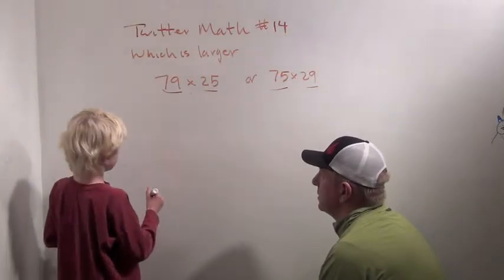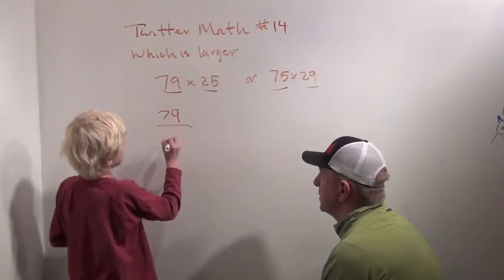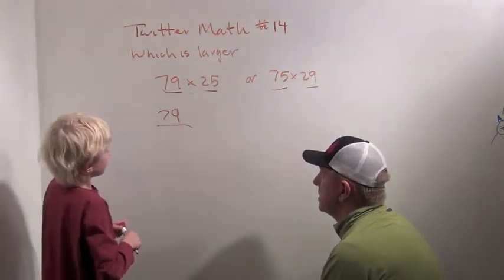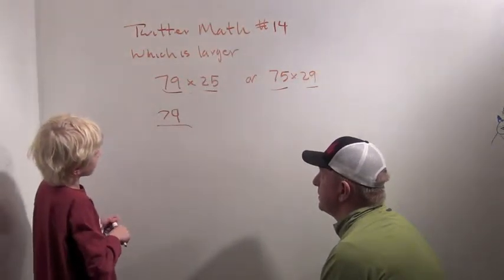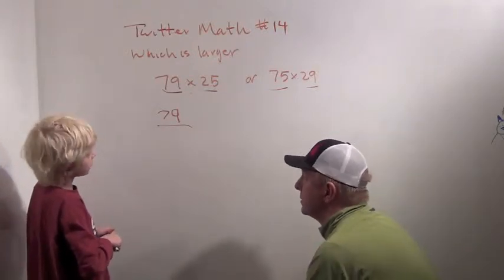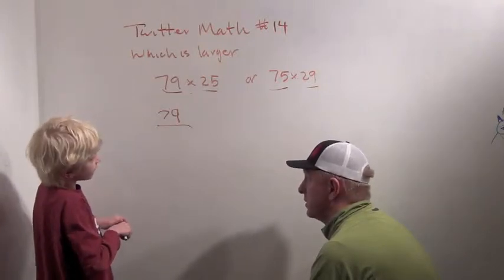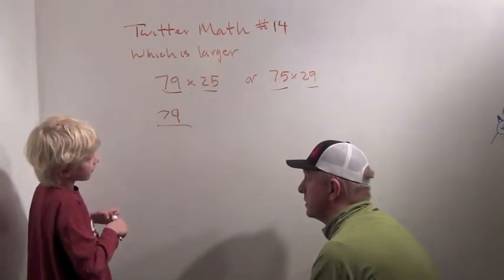So let's see. 79. What does that factor into? Is it divisible by 2? No. Is it divisible by 3? No. Not 4. Not 5. Not 6.